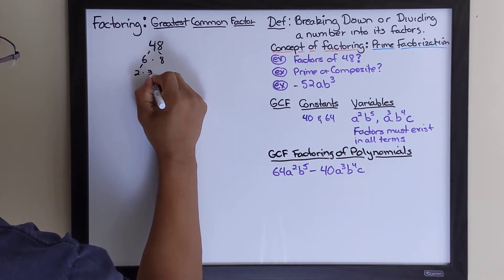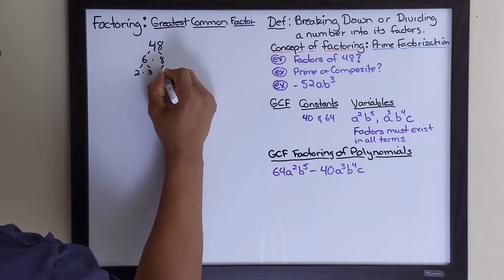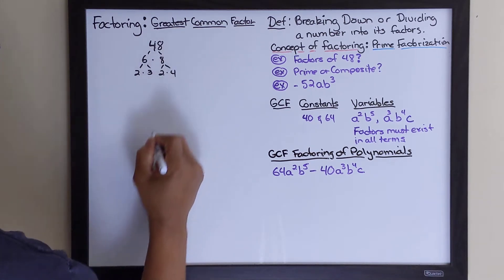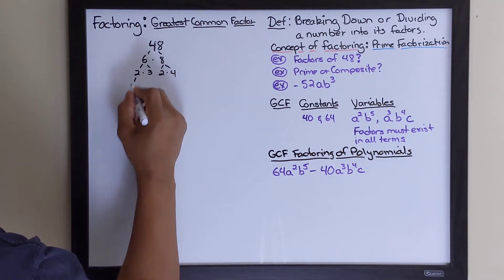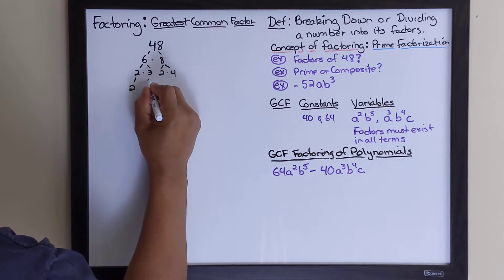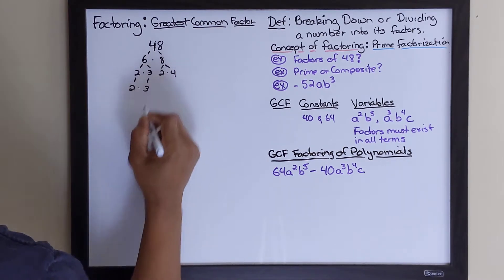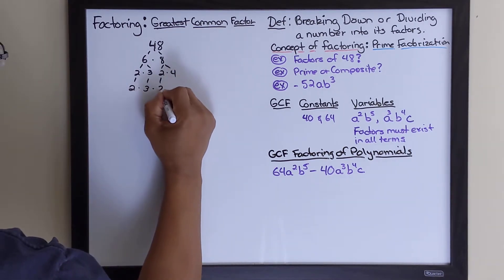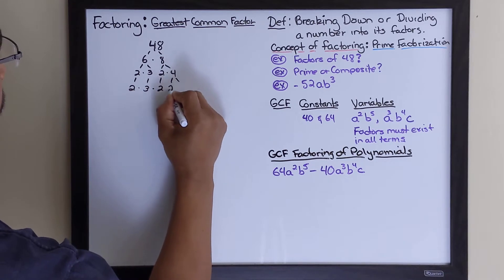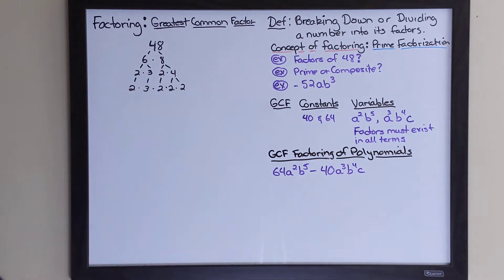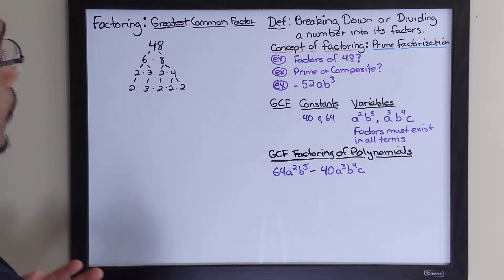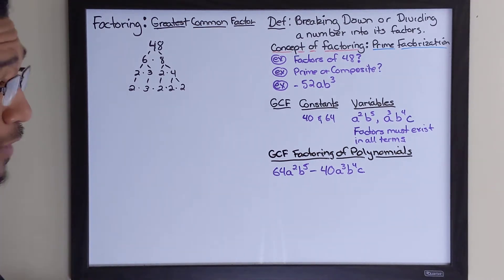Then we break that down further: 6 becomes 2 times 3, and 8 becomes 2 times 4. Now 2 can't be broken down anymore, so we rewrite it. 3 can't be broken down either. Then 4 breaks down into 2 times 2. At this point 48 has been fully broken down using prime factorization — we factored it.